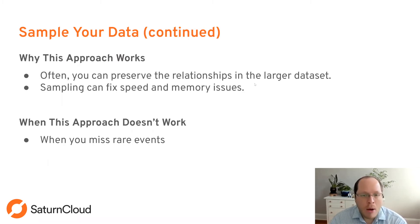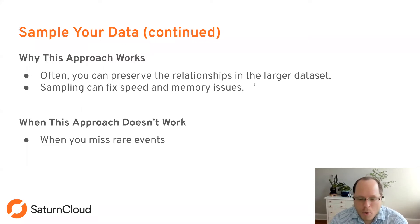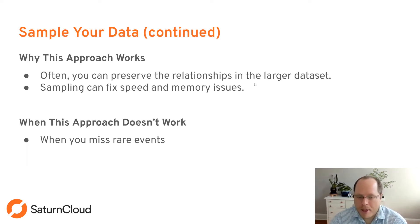This works because you can often preserve the relationships of the larger dataset in a smaller sample. Even using a million rows of a 10 million row dataset, if the relationships hold in that smaller dataset, you can still run a model and see if it works. This fixes both speed and memory issues simultaneously. However, it doesn't work for datasets with rare events — if you have a one-in-a-million event but it doesn't appear in your sample, you won't have a functional model.